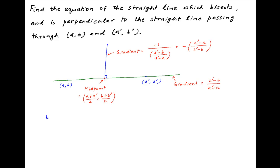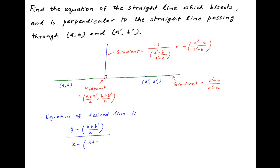Therefore, the equation of the line that passes through the midpoint of the two given points and is perpendicular to the line joining the two given points is: [y - (b + b')/2] / [x - (a + a')/2] = -(a' - a) / (b' - b).